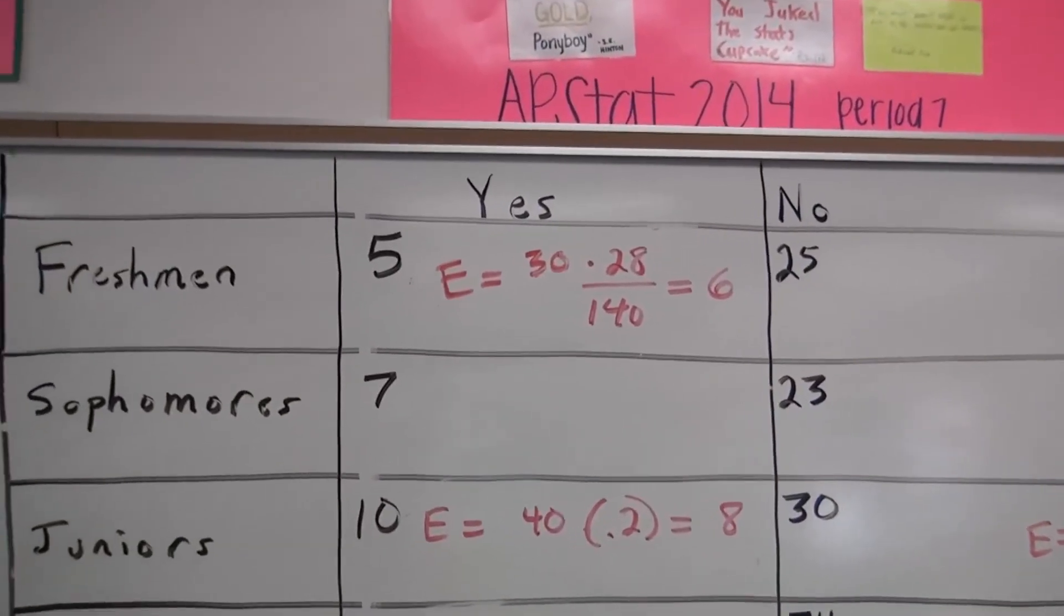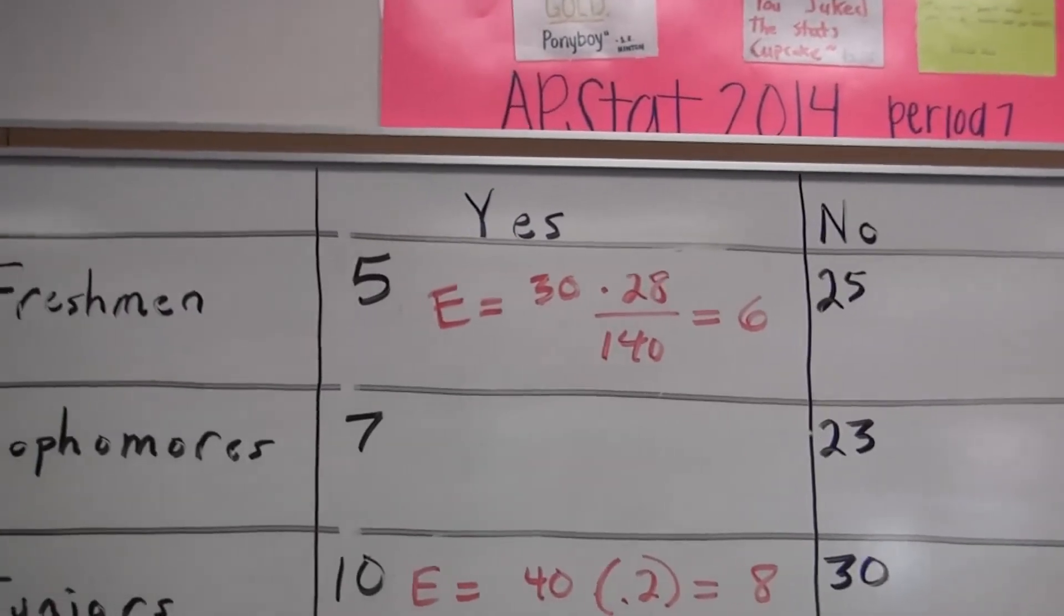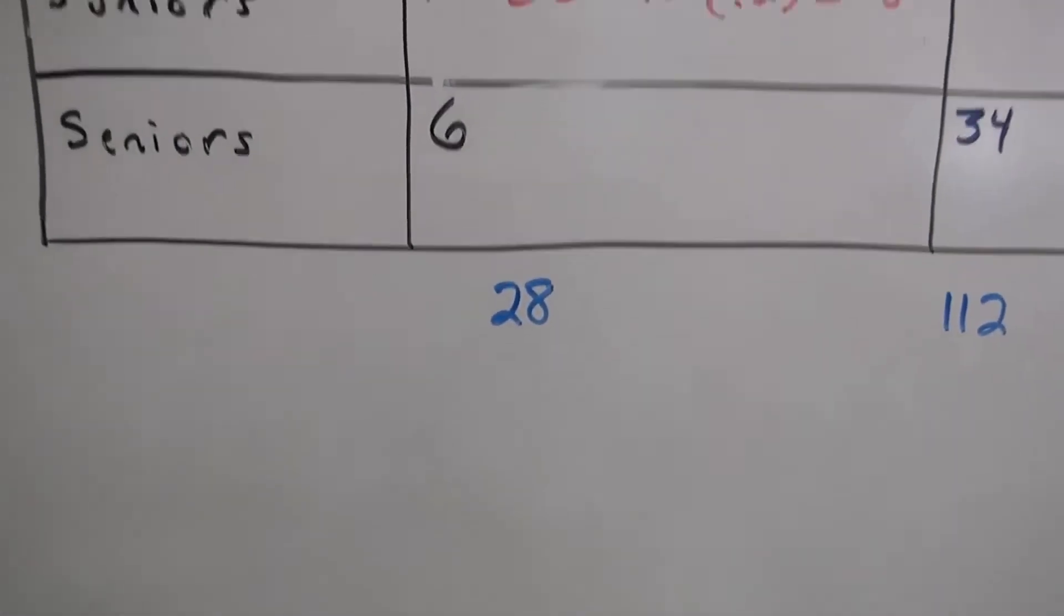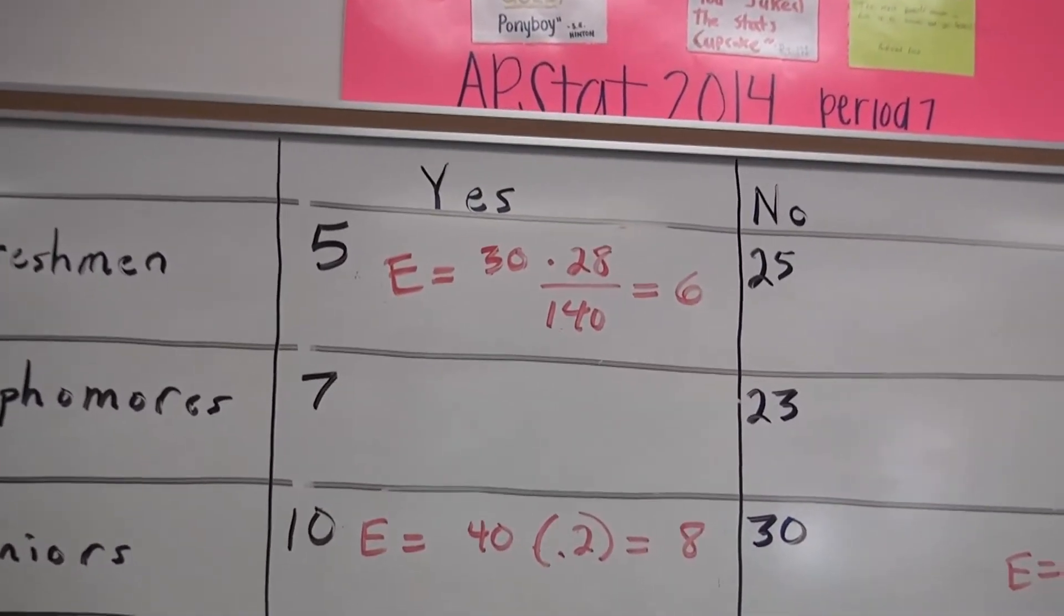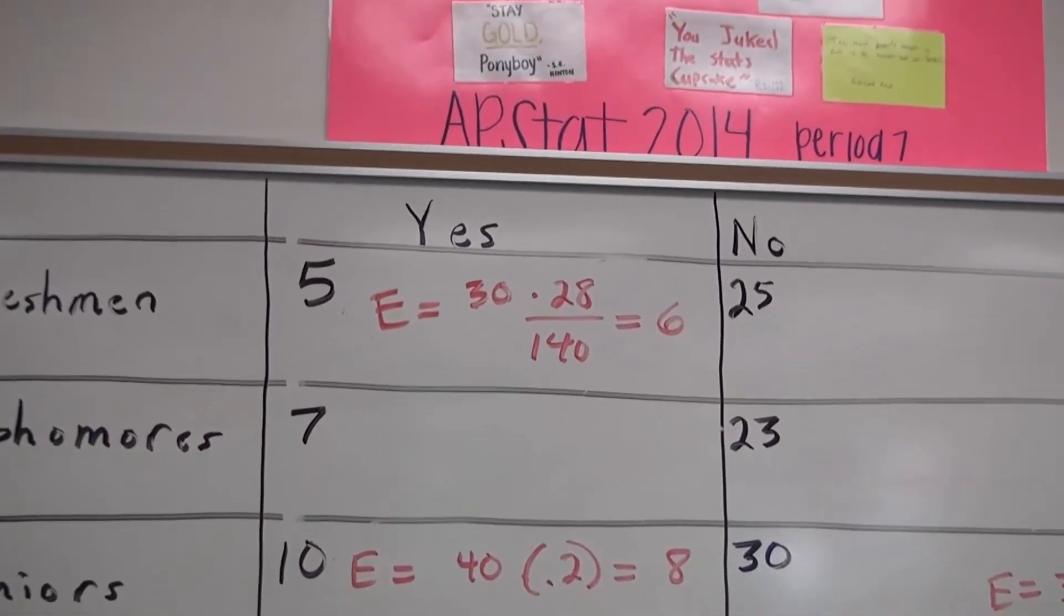Now we follow the formula. The expected count is the row total, which is 30, times the column total, which is 28, divided by the grand total of 140. That gives us 6.